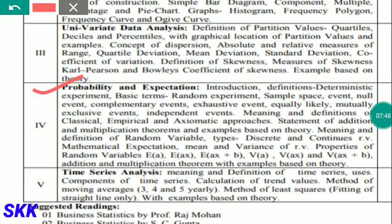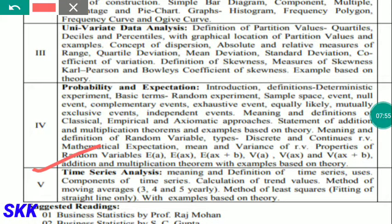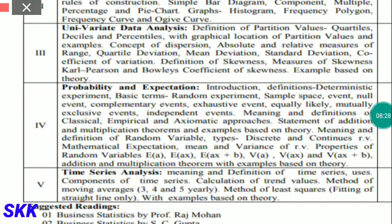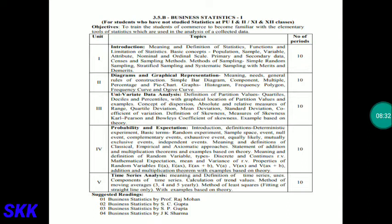The last unit is time series analysis. In this unit you will study different ways in which time series data is analyzed. The two main methods given importance are moving averages and the method of least squares. This is a simple and easy-to-understand unit covering basic concepts.